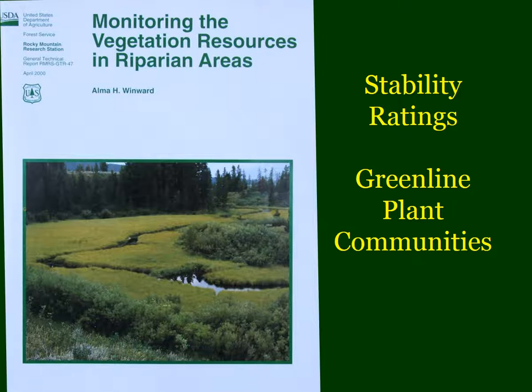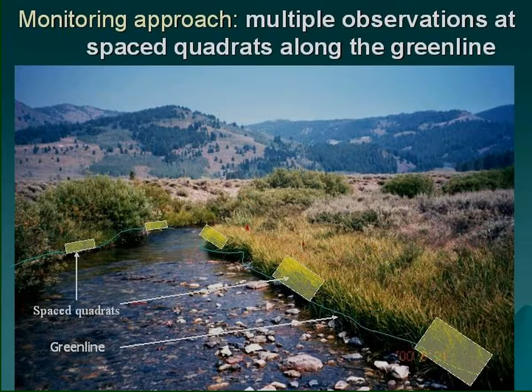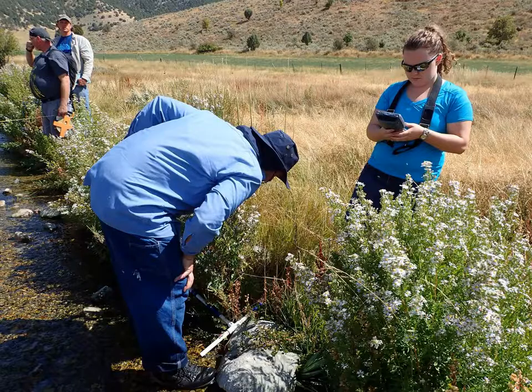He also established how to identify the green line plant communities — the first line of perennial vegetation at the edge of the water. The MIM monitoring approach requires multiple observations at fixed and uniformly spaced quadrants along the green line, and it involves measurements and a lot of data collection and recording.